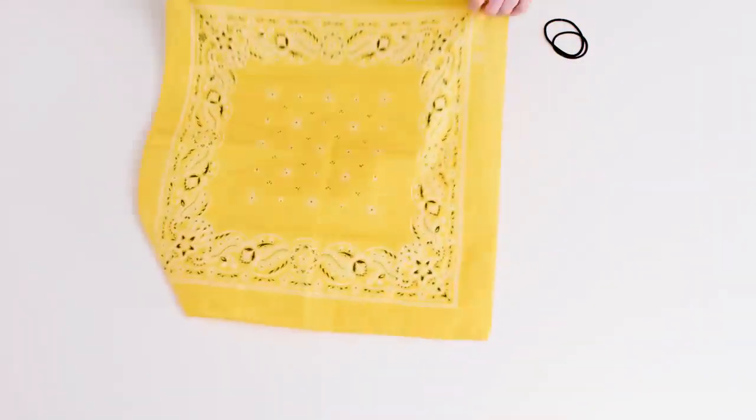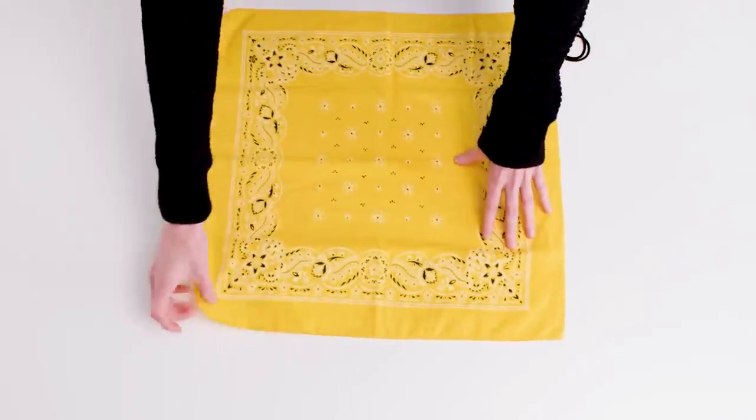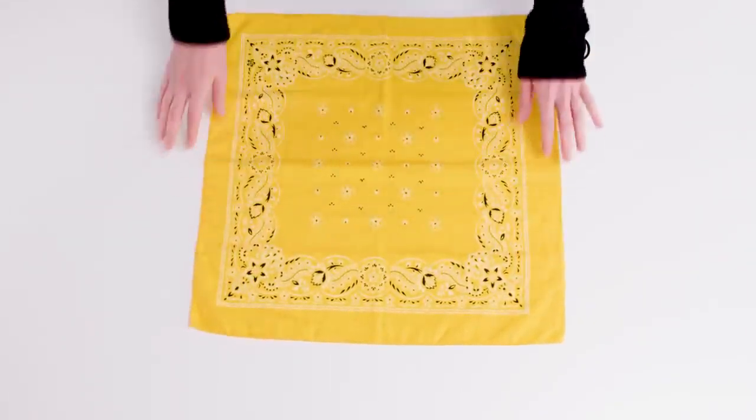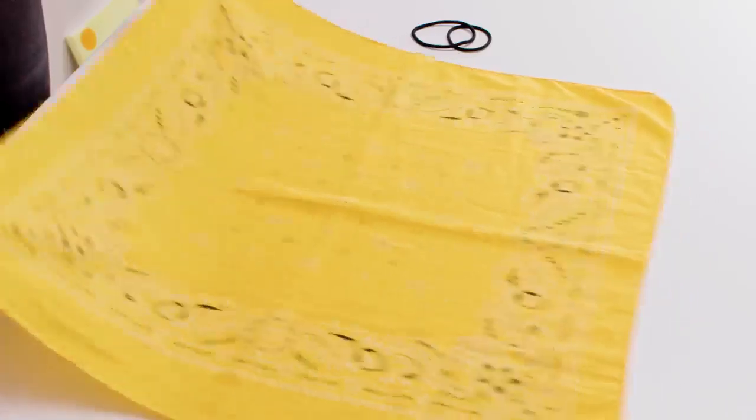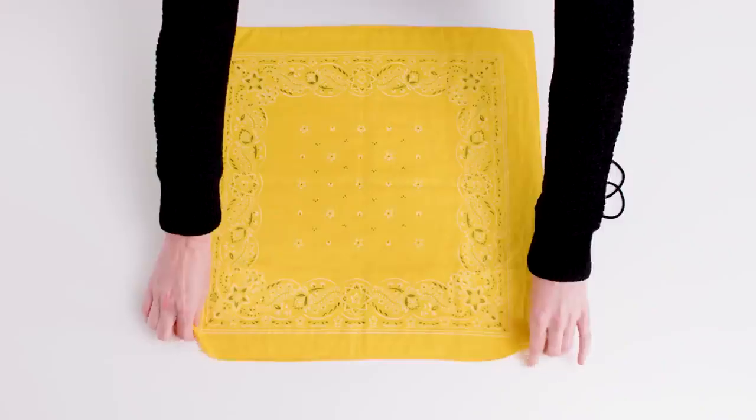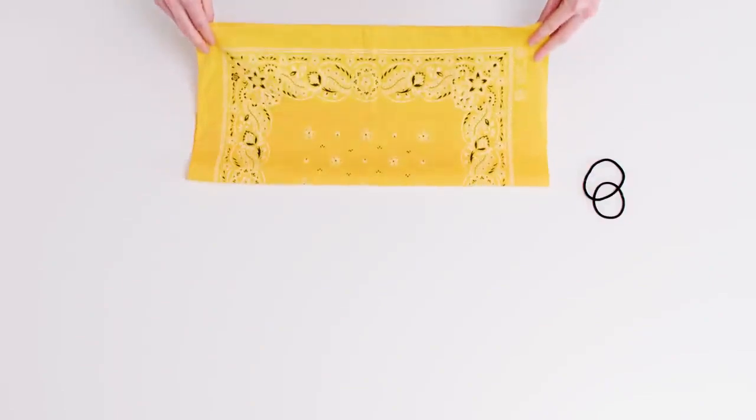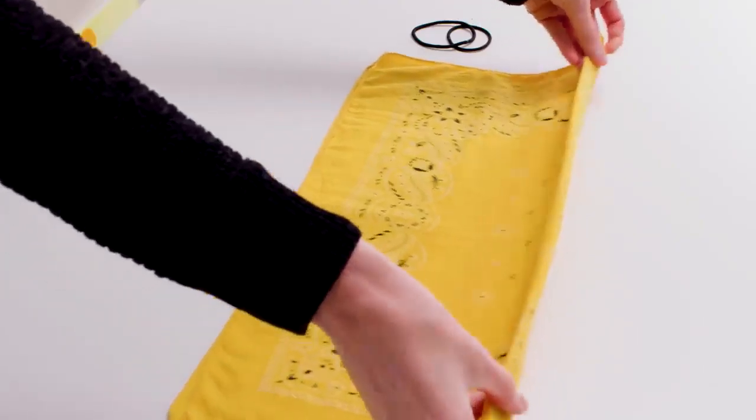So grab a bandana or cloth square that can be washed after each use, two hair ties or rubber bands and let's make a mask together. Lay the cloth square out flat, fold it in half, then half it again.